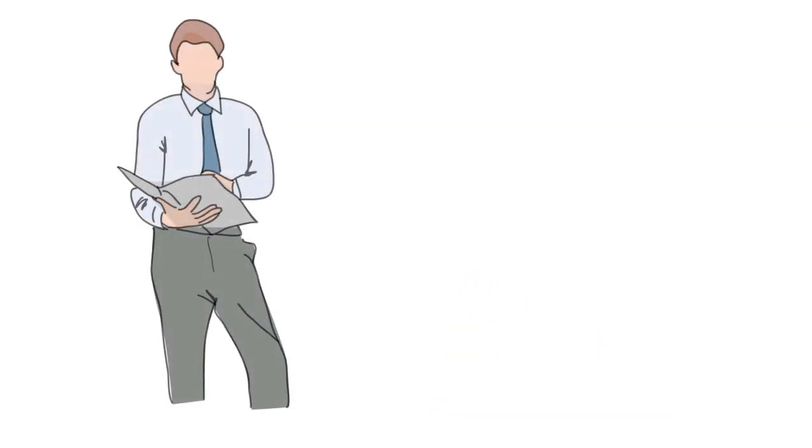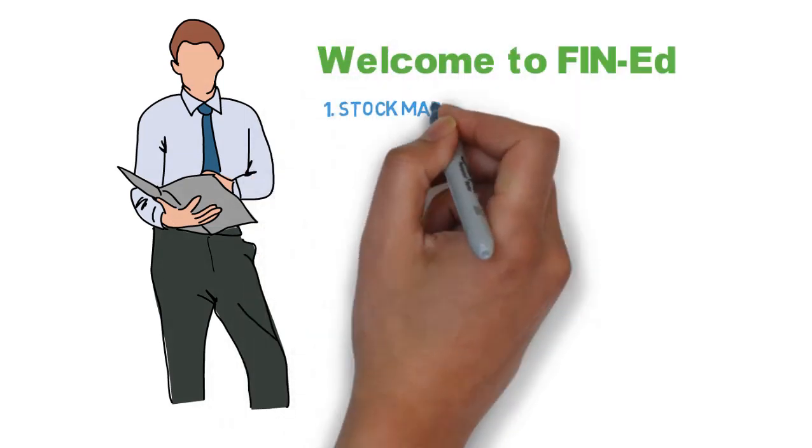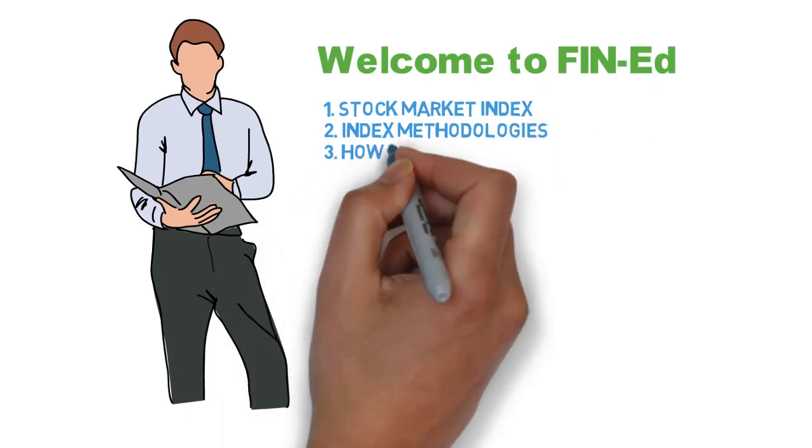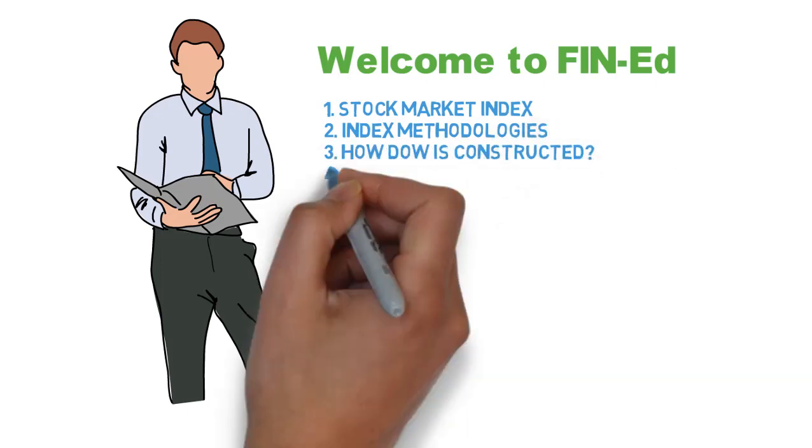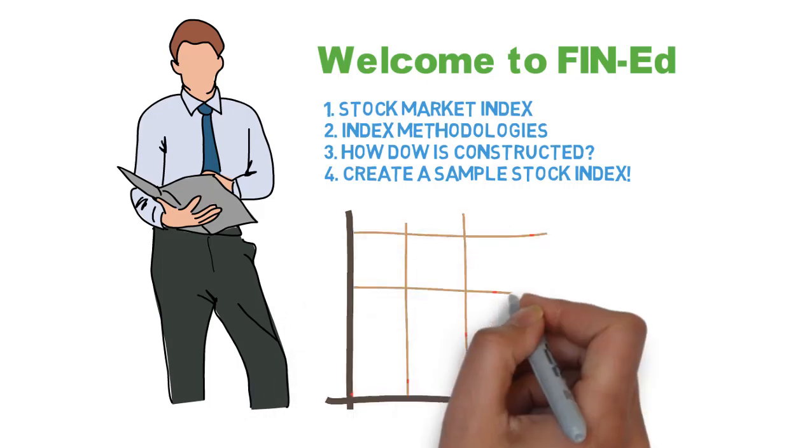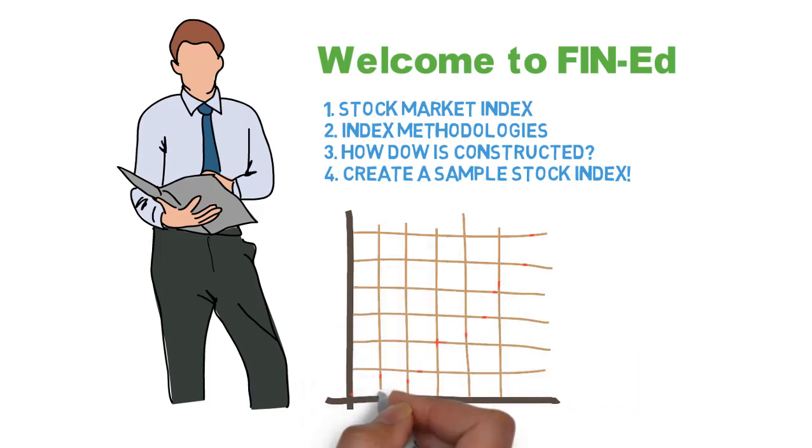Welcome to Financial Education. In this video, I'm going to talk about what stock market index is, what different types of index methods are available, and how best known stock market index such as Dow Jones Industrial Average is calculated. Finally, I will show a numerical example as to how you can come up with your own index as Dow Jones. Let's begin.